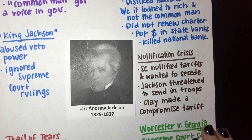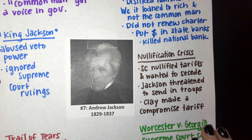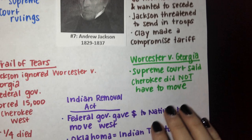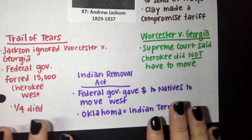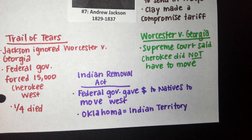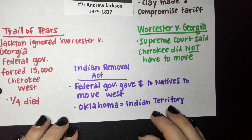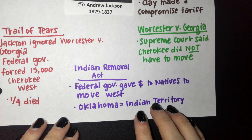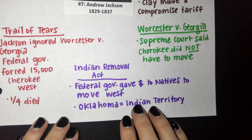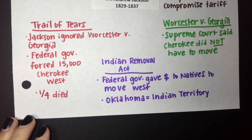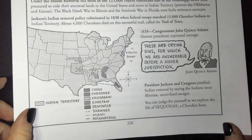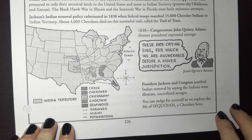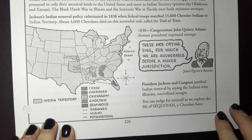Andrew Jackson defied the Supreme Court and told federal agents to go ahead and enact the Indian Removal Act, removing Native Americans from Georgia, Florida, and Tennessee. Native Americans were given about $5 million for the land, but given how much land they were surrendering — land they legally had the right to — it was not fair compensation. Jackson completely ignored Worcester v. Georgia. These Native Americans were packed up and moved 1,100 miles to Oklahoma and Kansas. On this journey of 15,000 Native Americans, approximately 4,000 died due to disease and starvation.